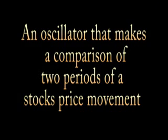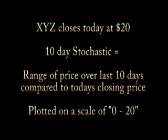This is an oscillator that makes a comparison of two periods of a stock's price movement: the current price and the price range over a specified time frame. As an example, stock XYZ closed today at $20. If we were using a 10-day stochastic, that would be the equivalent of the range of the price over the last 10 days compared to today's closing price of $20. This is then plotted on a scale of 0 to 100.